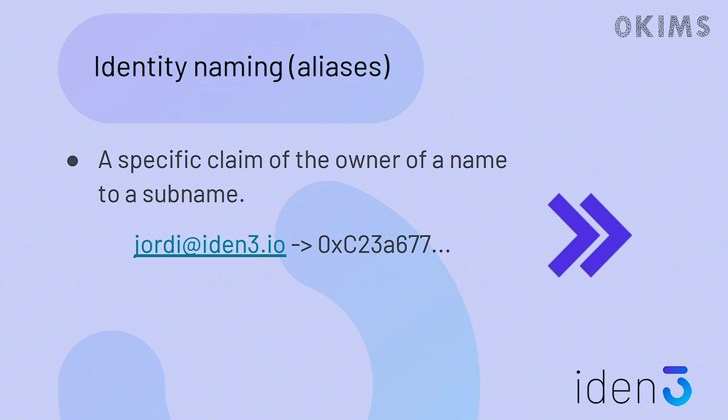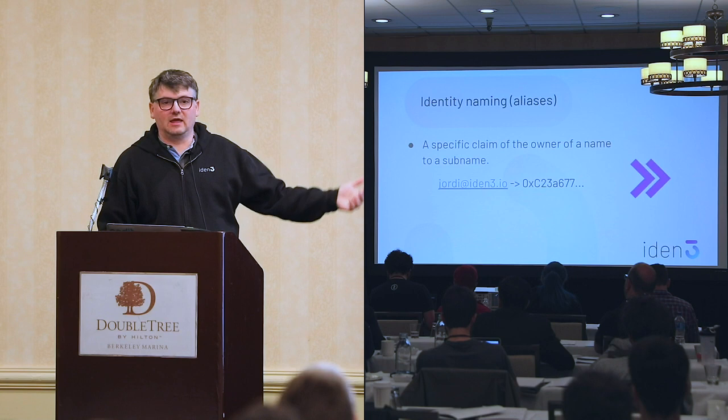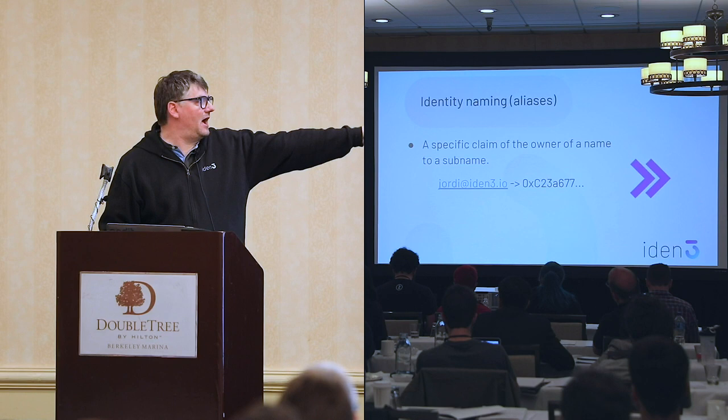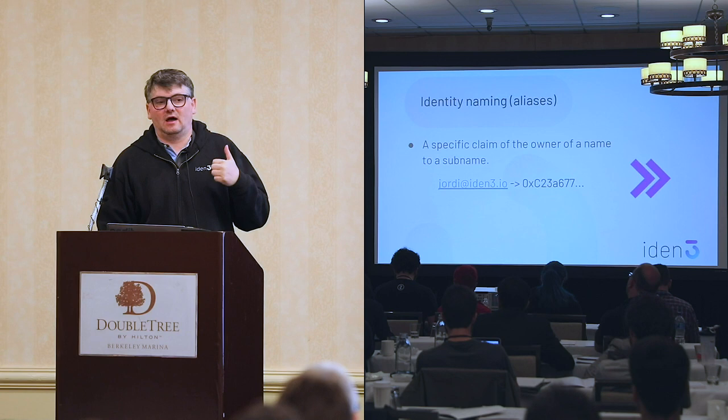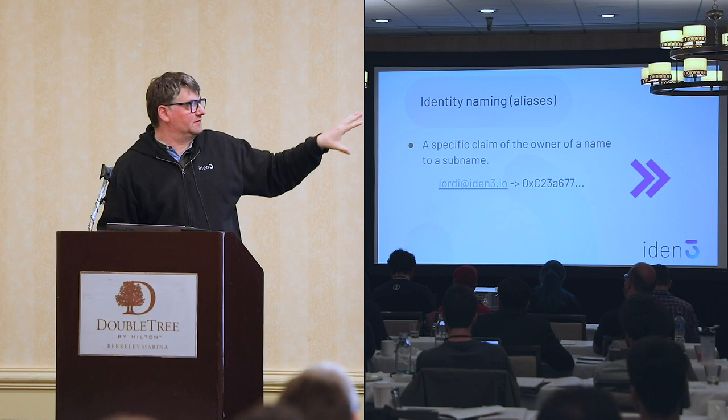Here is an example of claims. Everything can be understood as a claim. One example is how we name identities — a name identity would be the owner of a domain name. For instance, the owner of IDENT3 could make a claim saying that jordi@ident3.io belongs to this identity. So you can understand even a full naming system as a sort of claims: domain names have owners, the owners are identities, and the identities make claims about ownership. You can extend that concept to everything that is a claim.